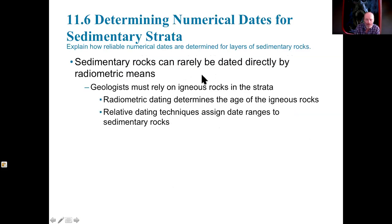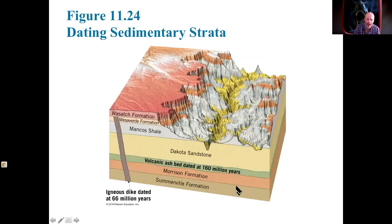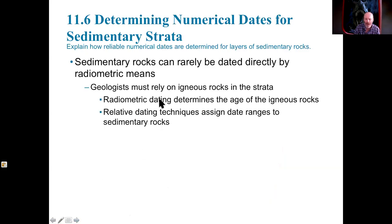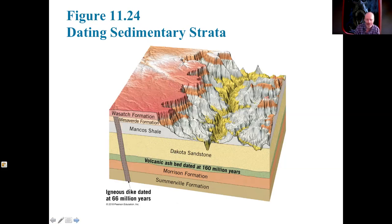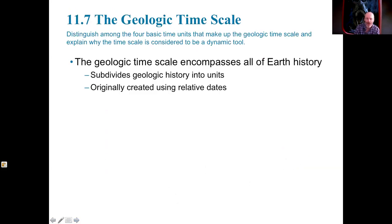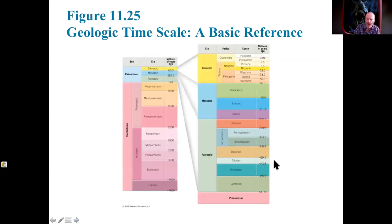Sedimentary rocks can rarely be dated directly because there are lots of processes happening on them that throw numbers off, so we use relative dating techniques there. But when we're dealing with igneous rocks, that's where we can use radiometric dating. We could measure volcanic ash or an igneous dike, and those could give us a sense that things underneath them are older. The formations underneath volcanic ash will obviously be older than that. The Dakota sandstone will be newer than that volcanic ash, but also older than the igneous dike.